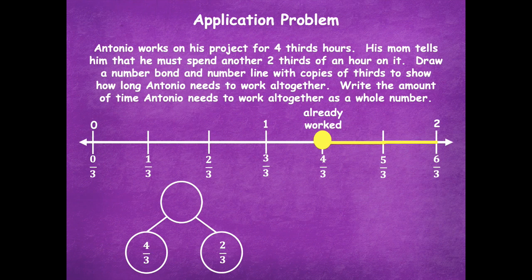So let's draw a number bond to match that. We went to four thirds, and we need two thirds more. Where did we end up on our number line when we started at four thirds and went two more thirds? Six thirds, or two. So Antonio has to work two hours all together. Good job with that one — it can be a little tricky. If you need to rewind and watch my explanation again, go ahead and do that.